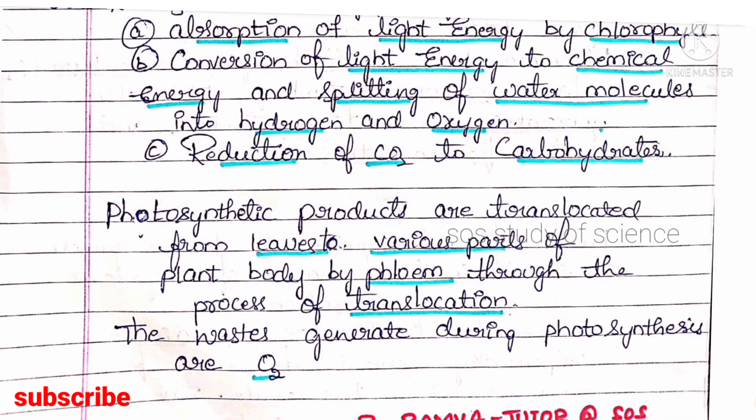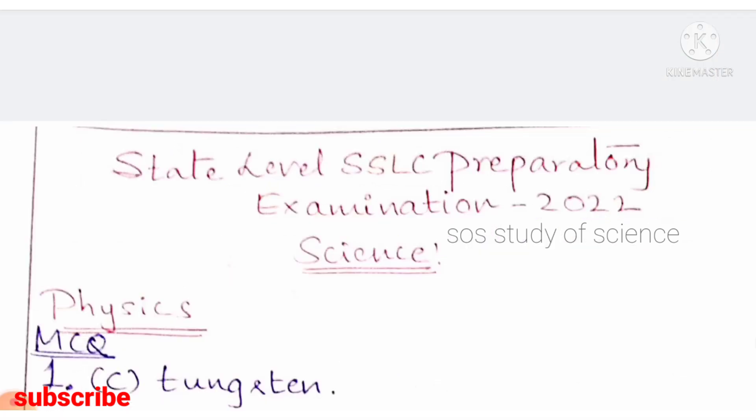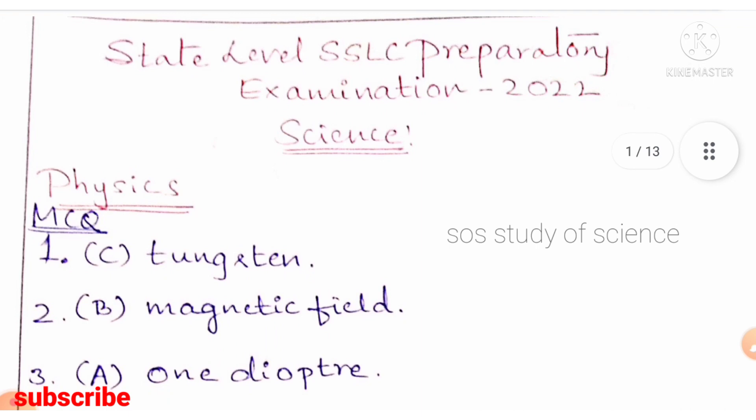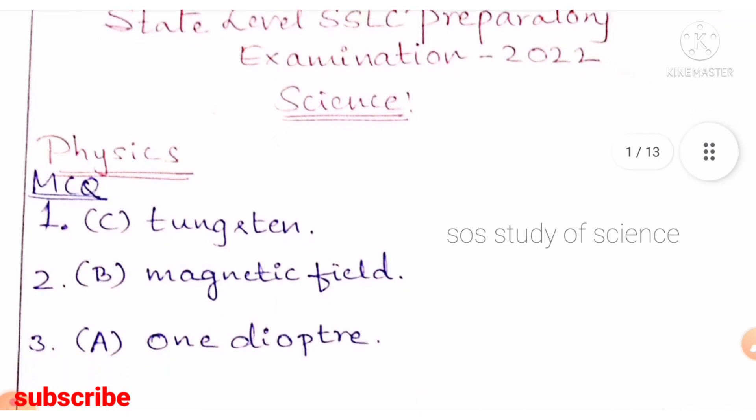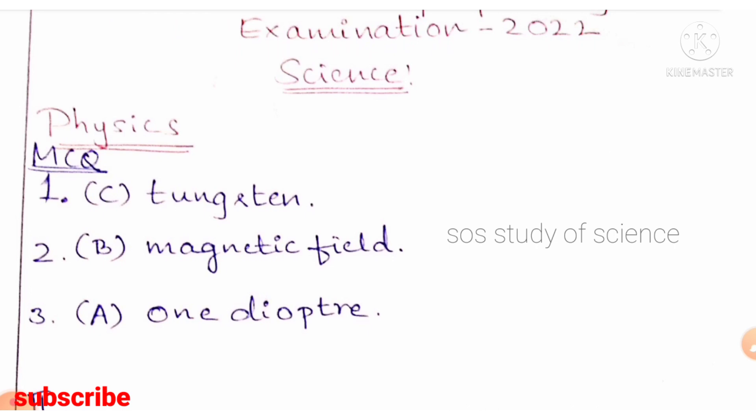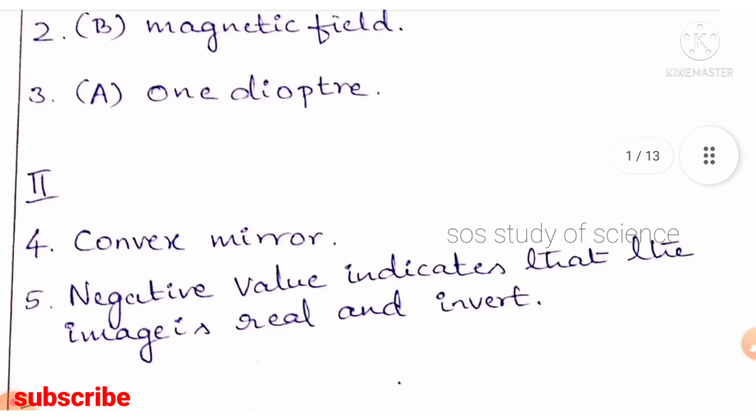Now let us focus on the Physics part. First MCQ: the material used in the filament of an electric bulb — option C, tungsten. Second: in Fleming's right-hand rule, the four fingers indicate the direction of the magnetic field. Third: the power of a lens with one-meter focal length — power is the reciprocal of focal length, so the answer is option A, one diopter.